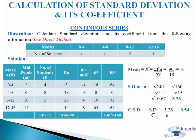Marks and number of students are provided to us. Marks are given in class intervals and number of students are the frequency. For this let us make the table of seven columns. In the first column we will write down marks, denoted by letter x: 0 to 4, 4 to 8, 8 to 12, and 12 to 16.